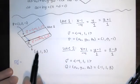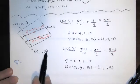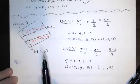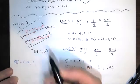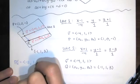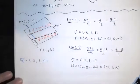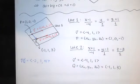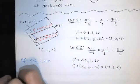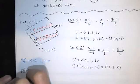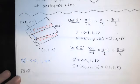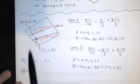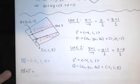Let's find vector PQ. We take the coordinates of terminal point Q and subtract the coordinates of initial point P: (−1 − 1, 1 − 0, 3 − (−1)) = (−2, 1, 4). A normal vector n is PQ crossed with v. Notice that v and PQ are not multiples of each other — they're not parallel — so we have two non-parallel vectors in the plane.